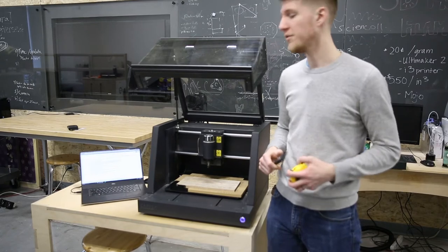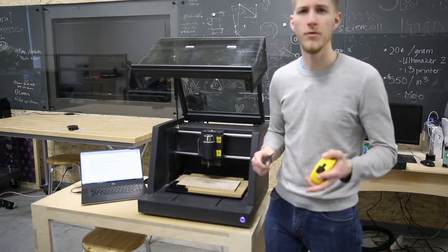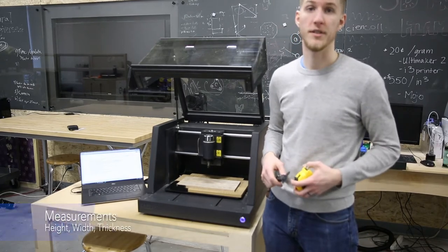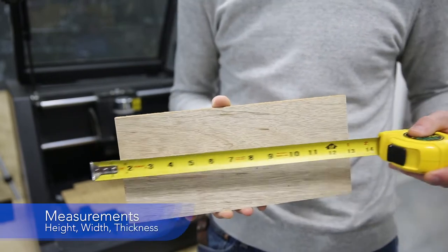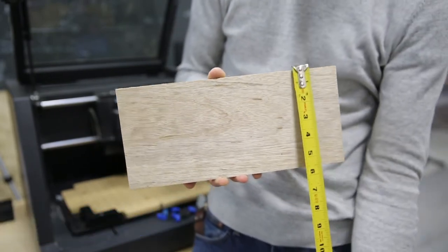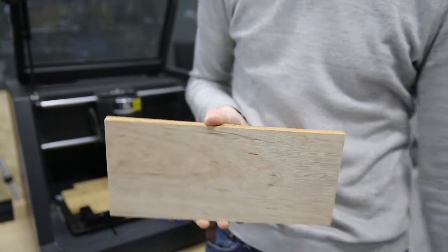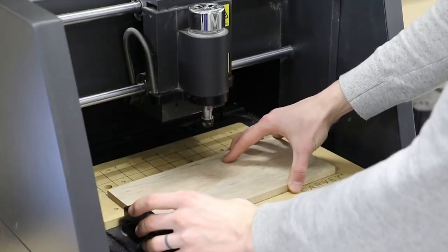In order to get started, we'll need to load the material into the Carvi, but before we do that, we're going to take some measurements. Using a tape measure, I'll measure the width and height of my material, and using calipers I'll measure the thickness. I'll take those measurements and enter them into ESL.